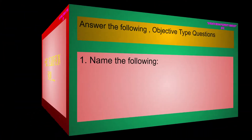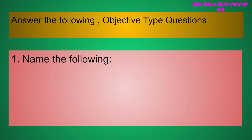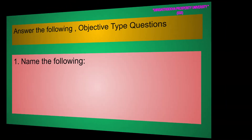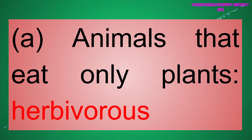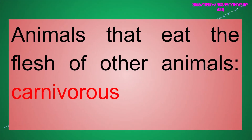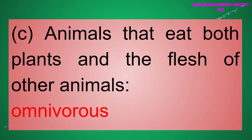Answer the following objective type questions. One: Name the following. (a) Animals that eat only plants — Herbivores. (b) Animals that eat the flesh of other animals — Carnivores. (c) Animals that eat both plants and the flesh of other animals — Omnivores.